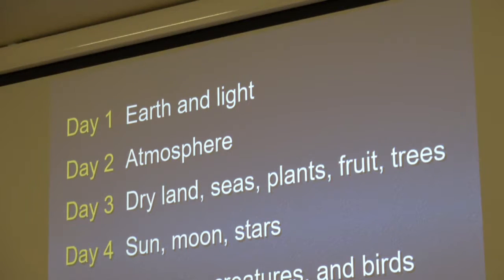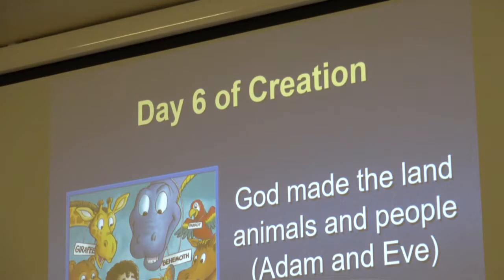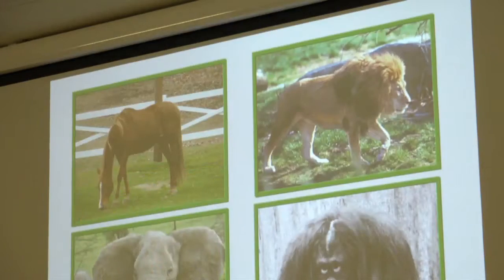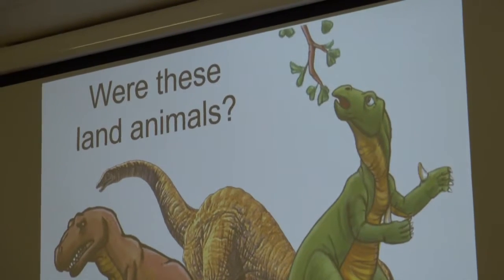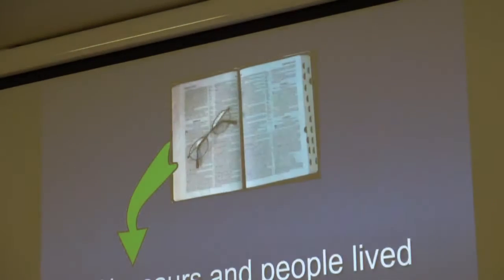Day 1, God created the earth and light. Day 2, the atmosphere. Day 3, dry land, plants, fruit trees. Day 4, sun, moon, stars. Day 5, sea creatures. Day 6 — what did God create on day 6? All the rest of the creatures: the land animals and people. God made land animals and people the same day. What does that mean? Are dinosaurs land animals? What day were they created? Day 6. So right there in Genesis chapter 1, the Bible teaches people and dinosaurs lived at the same time.